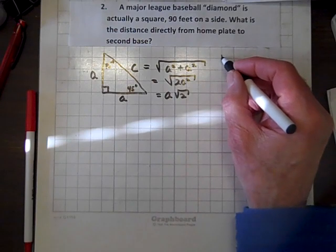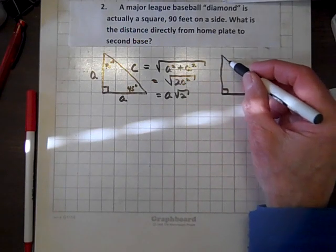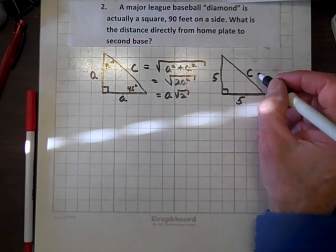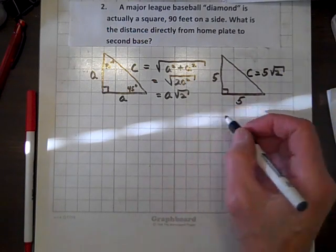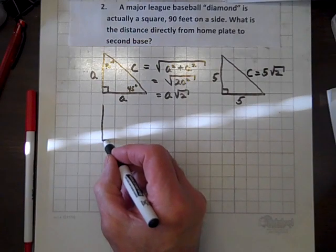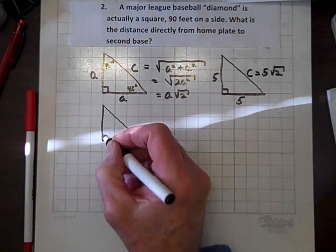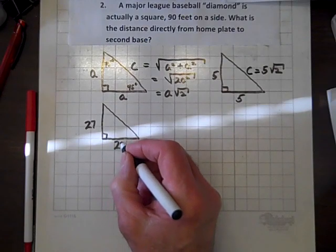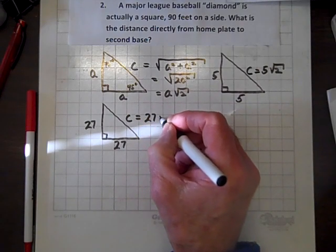Let's construct an example. If we have a 45-45-90 right triangle where each leg has length 5, then c equals 5 root 2. Let's do one more: if each leg has length 27, then c equals 27 root 2.